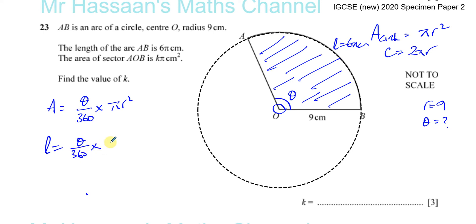I know what r is and I know what L is, so I can find what θ is. Once I know what θ is, I can use it in the area equation and we're done.